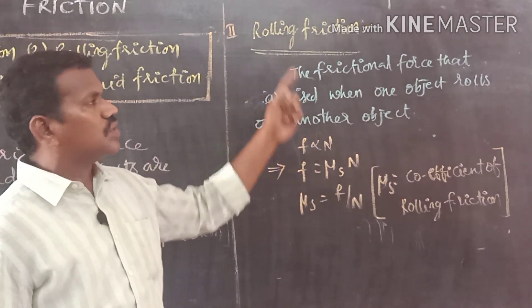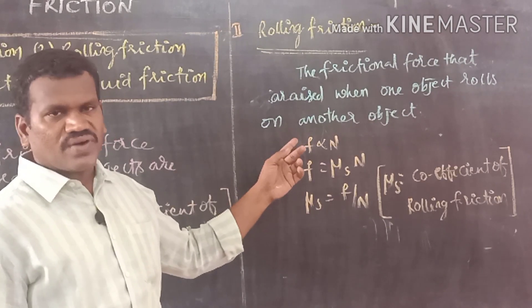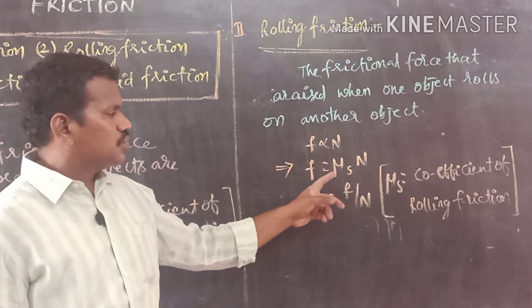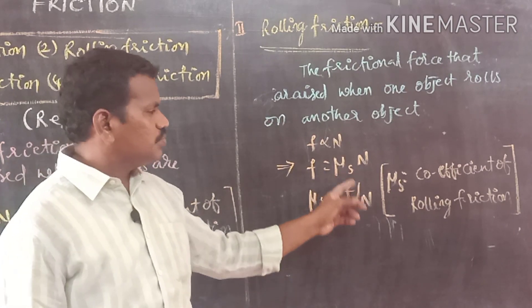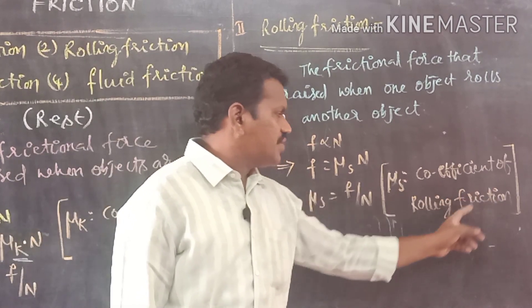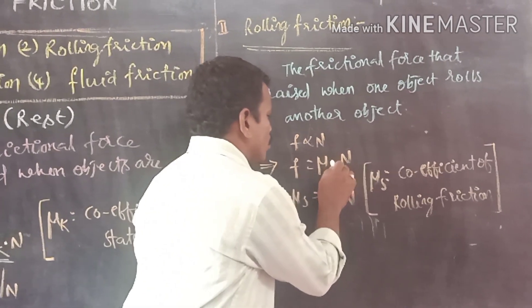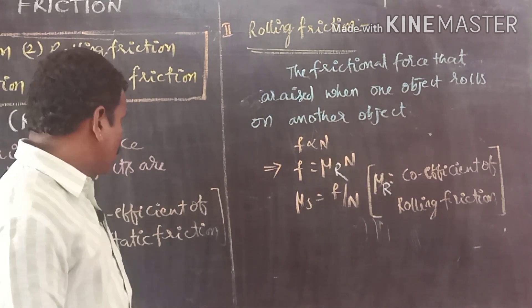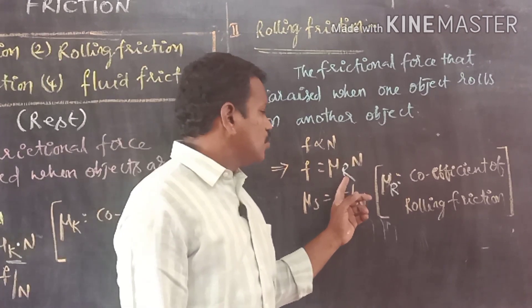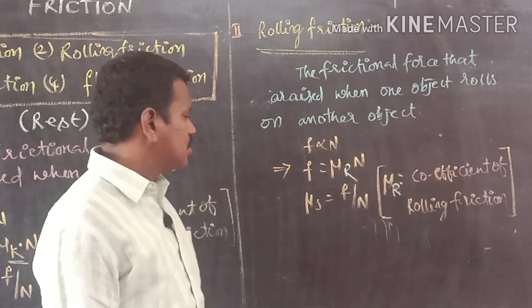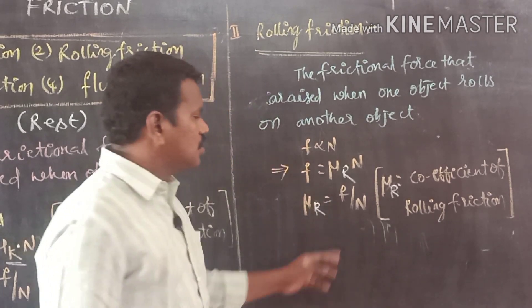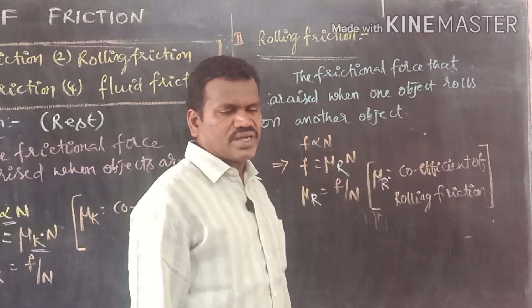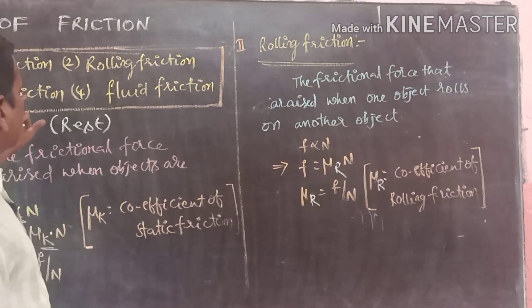See the definition: the frictional force that arises when one of the objects rolls on another object is called rolling friction. As per the formula, frictional force F is directly proportional to normal force N. F is equal to mu R into N, where mu R is the coefficient of rolling friction. Mu R is equal to F divided by N.